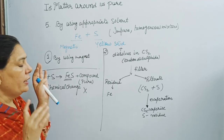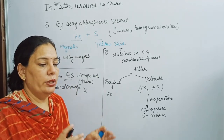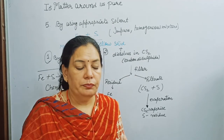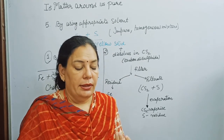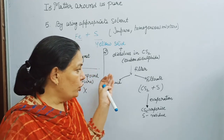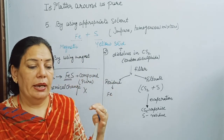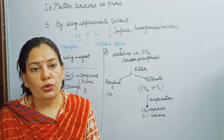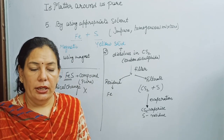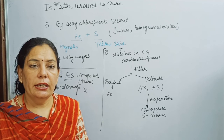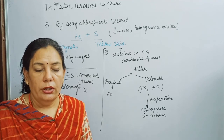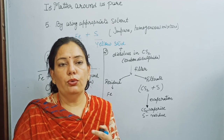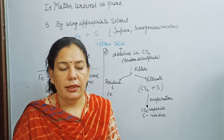So children, if two or more solids are present, we can separate them by hand picking, sieving, using an appropriate solvent, using a magnet, or by the process of sublimation. In our next video, we will learn how to separate solids from liquids and mixtures of two or more liquids. Thank you.